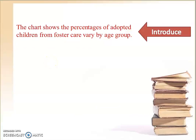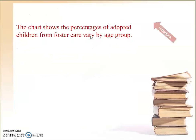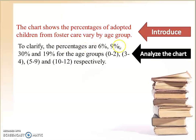The question asks: what do the percentages indicate about the relationship between the age group of adoptees and adoption rate? Step one — introduce: 'The chart below shows percentages of adopted children from foster care by age group.' We can copy that from the given. Step two — analyze the numbers: the percentages are 6%, 9%, 30%, and 19% for the age groups zero to two, three to four, five to nine, and ten to twelve respectively.